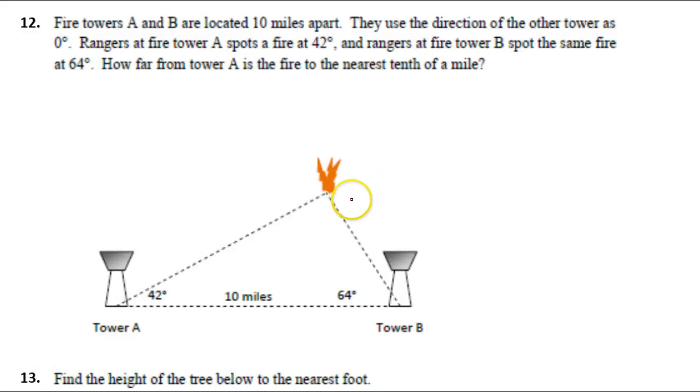In this video, we are going to solve a couple of real-world problems using the Law of Sines. Fire towers A and B are located 10 miles apart. They use the direction of the other tower as 0 degrees, meaning they're right across from each other.